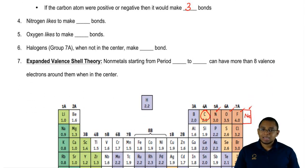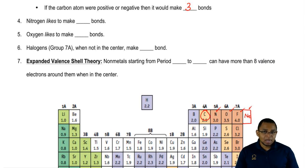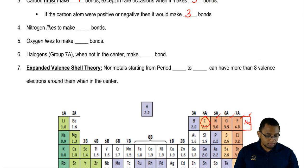Next we're going to say nitrogen likes to make how many bonds? Nitrogen is three spaces away from being a noble gas. Therefore, nitrogen wants to make three bonds. Every bond it makes, it picks up an electron. So nitrogen likes to make three.